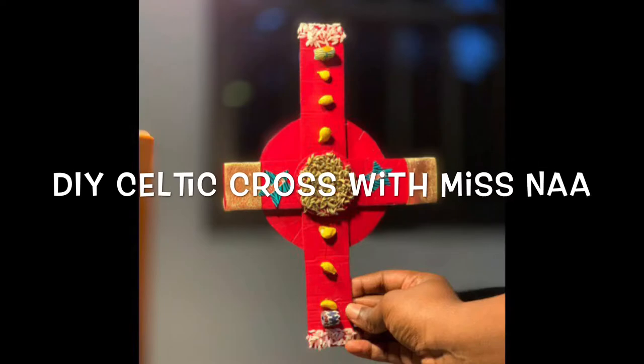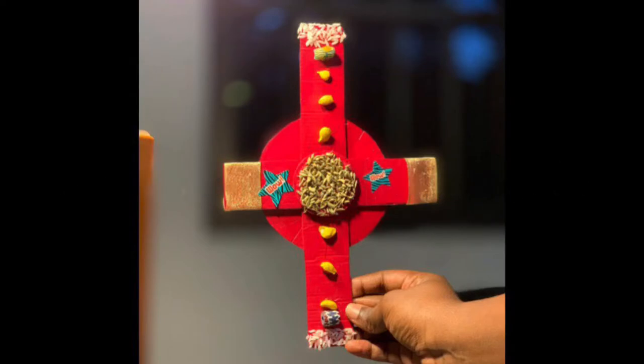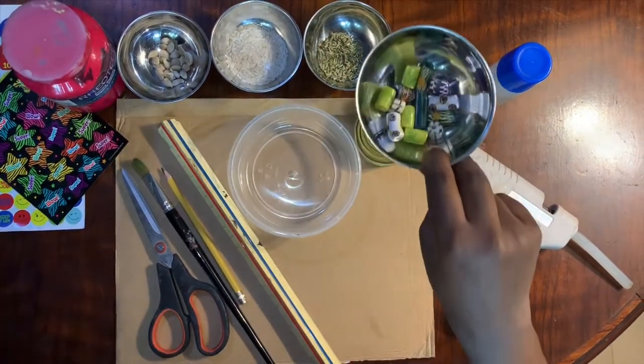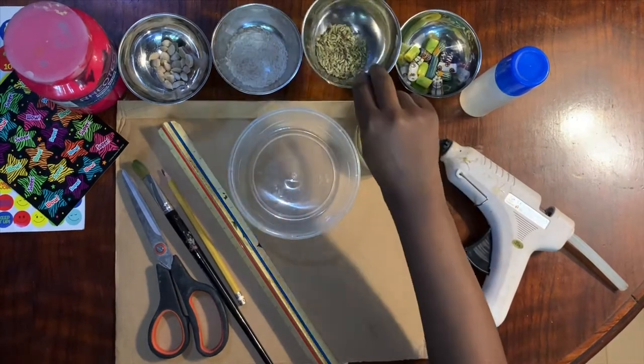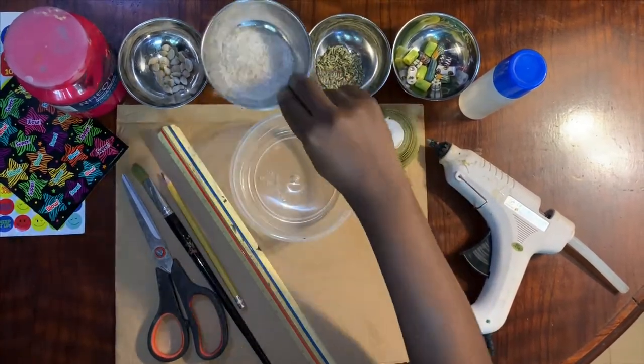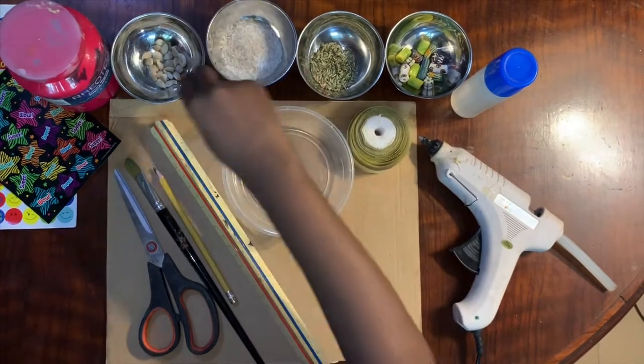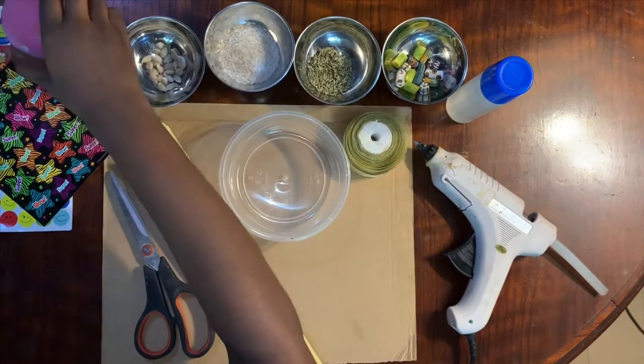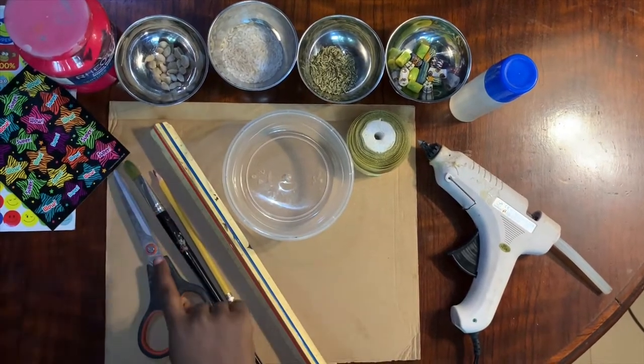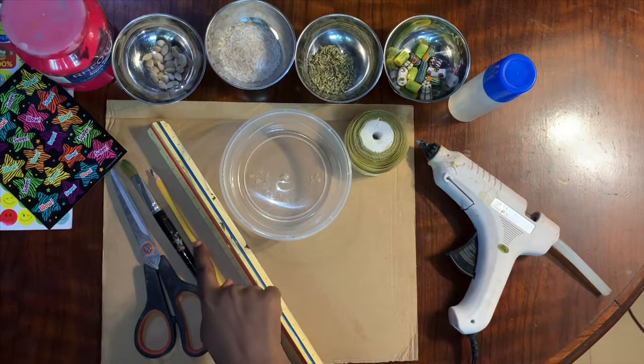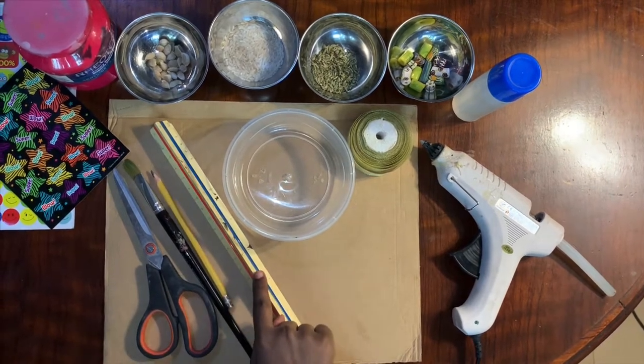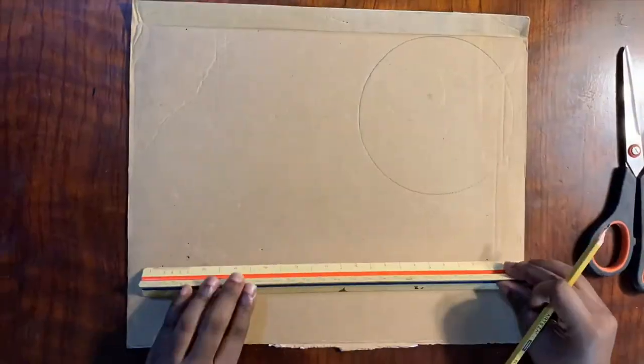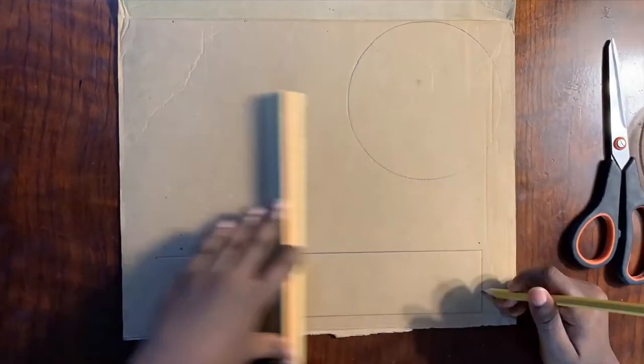Hi guys, for this tutorial I'm going to be using a glue gun or liquid glue, some beads, some seeds called kinkit, some rice that you can color, some orange seeds, paint, stickers, scissors, a paintbrush, a pencil, ruler, something circular, a ribbon, and cardboard.